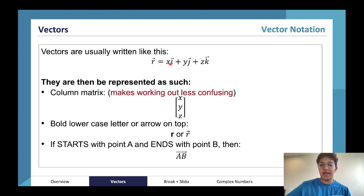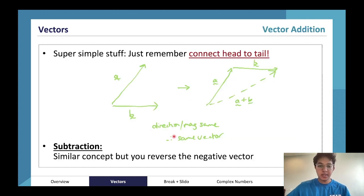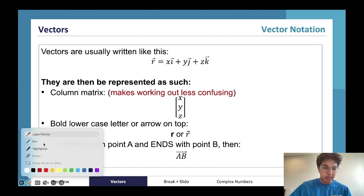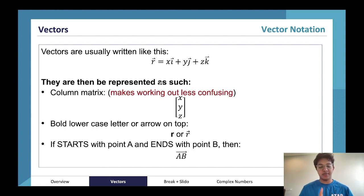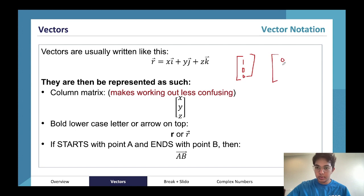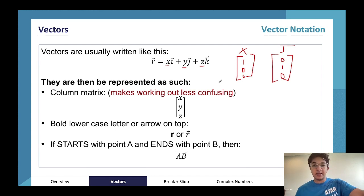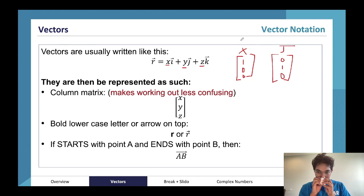The next topic is direction components and unit vectors. i, j, and k are all unit vectors — a unit vector is a vector of length one with magnitude one. So i is one in the x component and zero everywhere else, j is zero, one, zero, and k is zero, zero, one. The things being multiplied alongside them are scalars — simple numbers — and they change the length of these unit vectors to make our overall vector.